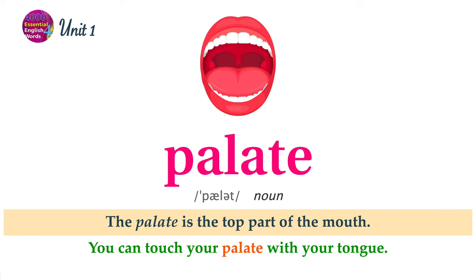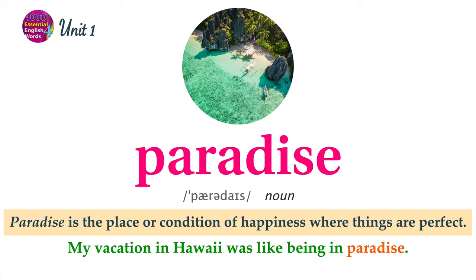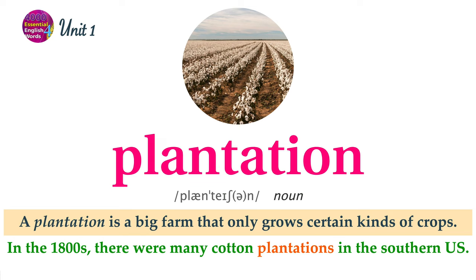The palate is the top part of the mouth. You can touch your palate with your tongue. Paradise is the place or condition of happiness where things are perfect. My vacation in Hawaii was like being in paradise. A plantation is a big farm that only grows certain kinds of crops. In the 1800s, there were many cotton plantations in the southern U.S.